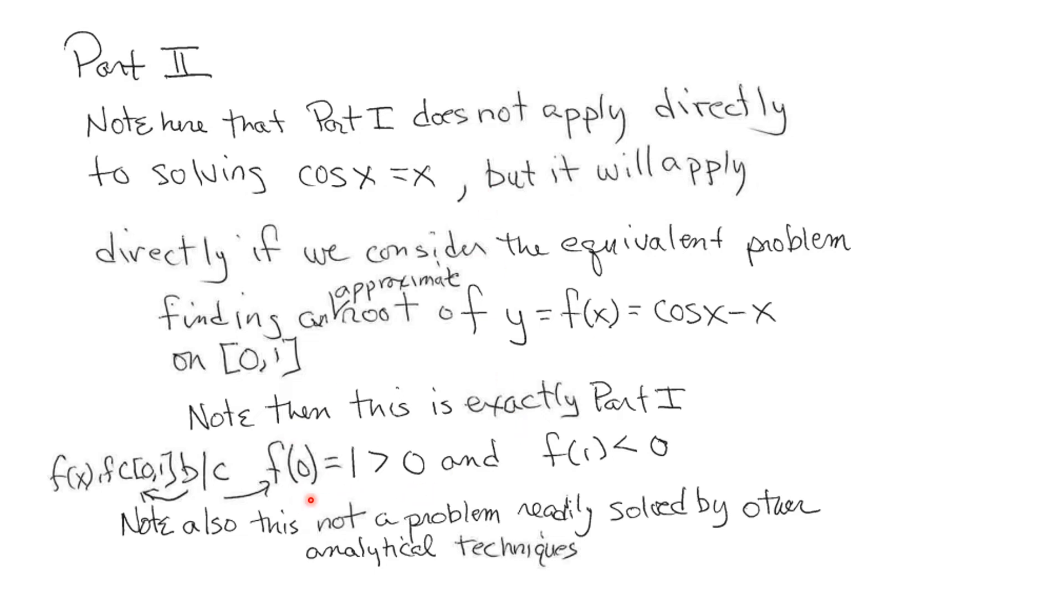Now, this does apply because f(0), in this case, equals 1, which is bigger than 0, and f(1) is less than 0, and this function is certainly a continuous function on [a, b]. So it does apply. So this is exactly Part 1. And you should note that solving this problem is not readily solved by other analytical techniques. And so a good engineer would probably be thinking about solving this using approximations like we're doing in this part.